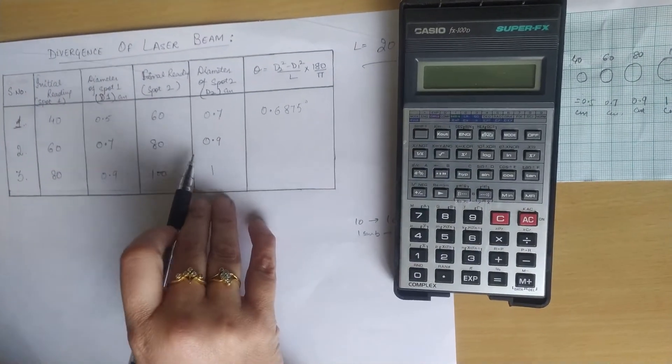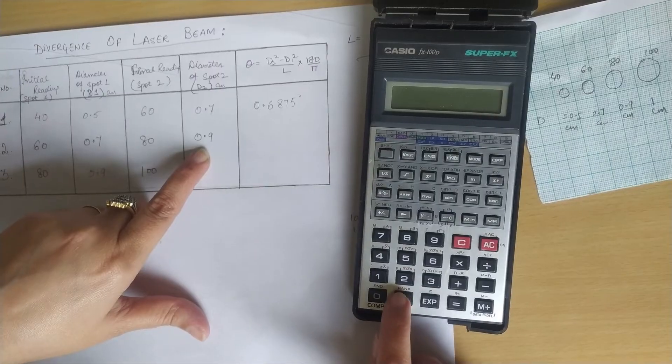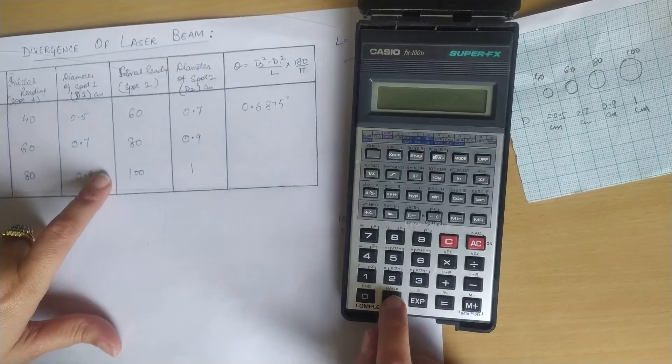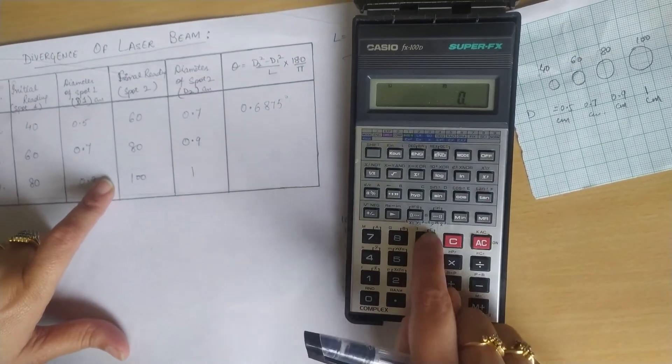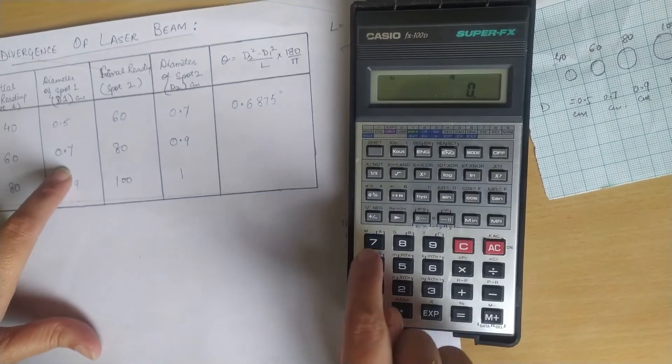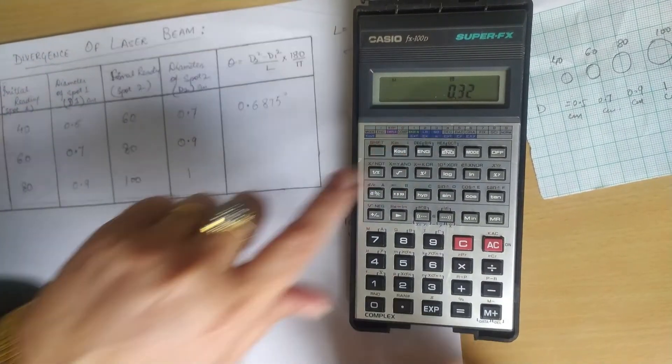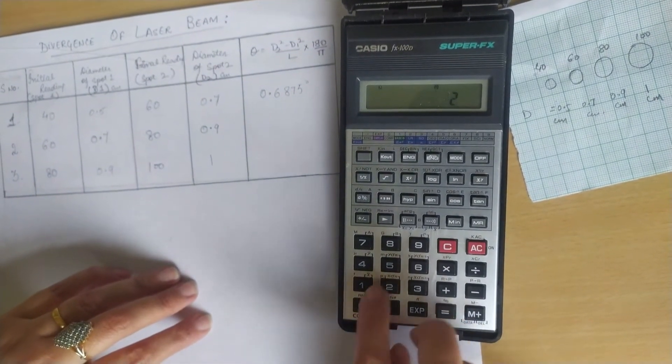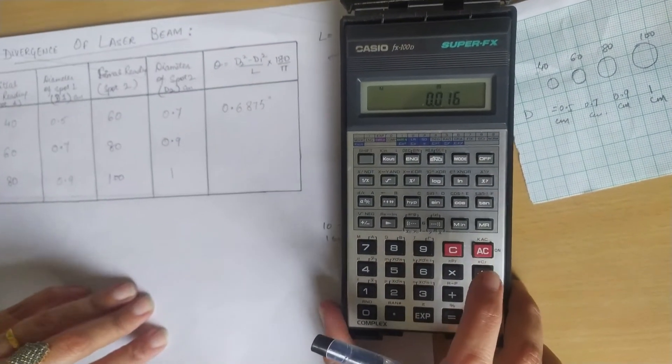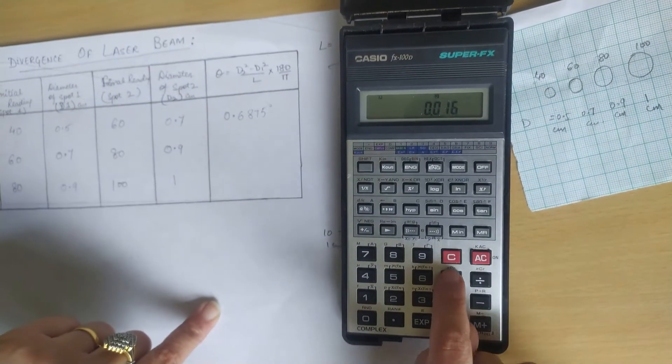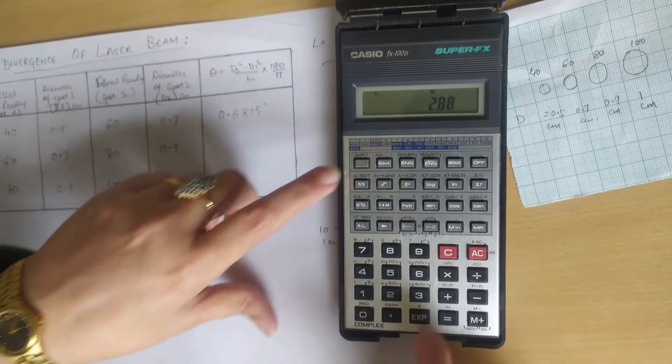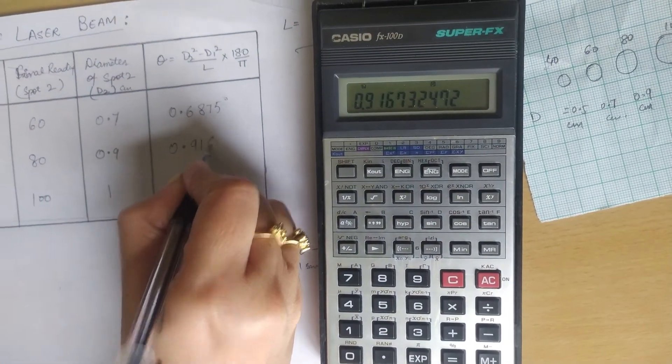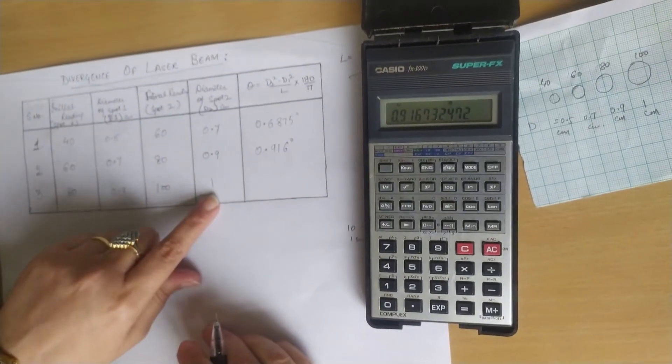Moving towards the second set of readings. D2 is 0.9, D1 is 0.7. So 0.9² - 0.7² comes out to be 0.32, divided by L that is 20. This is in radians, we convert it into degrees by multiplying by 180 and dividing by π. The answer is 0.9160 degrees.